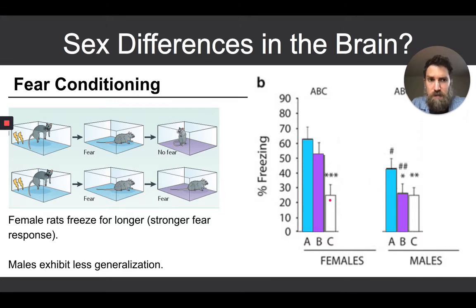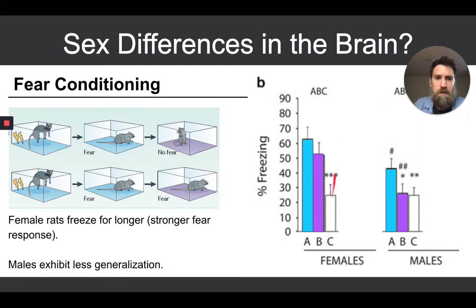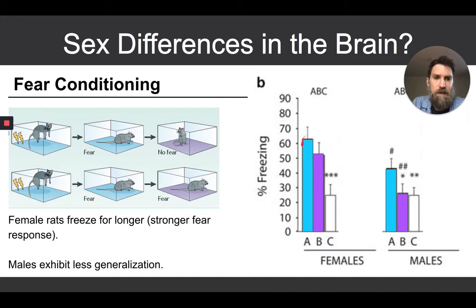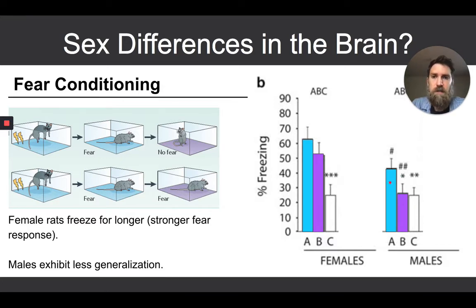This contrasts starkly with females: if you pick up females and put them in the purple cage, they nearly double the amount of time they freeze compared to the home-cage control. Females are showing a generalized response — they cannot discriminate between blue and purple boxes. Even though it was just the blue box where they got shocked, they treat the purple box as if they got shocked in it. Males show a significant fear response only to the blue box, not the purple — they have discriminated between the two stimuli.